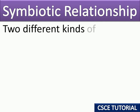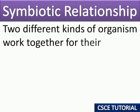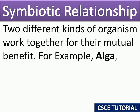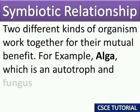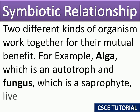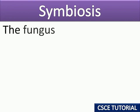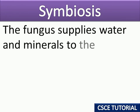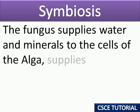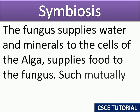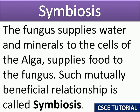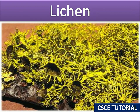Symbiotic relationship: two different kinds of organisms work together for their mutual benefit. For example, alga, which is an autotroph, and fungus, which is a saprophyte, live together in lichen. The fungus supplies water and minerals to the cells of the alga, and the alga supplies food to the fungus. Such a mutually beneficial relationship is called symbiosis.